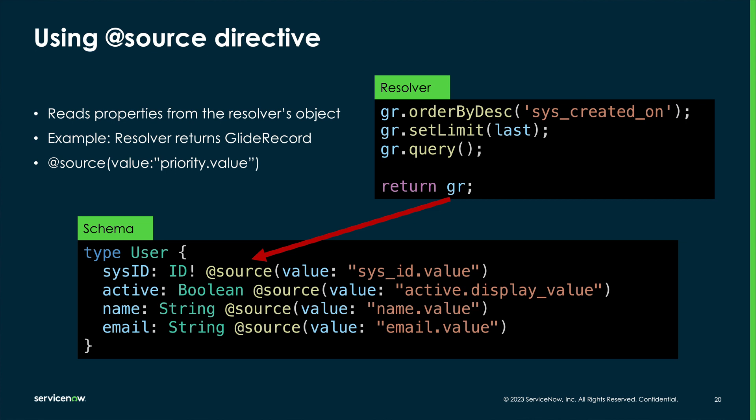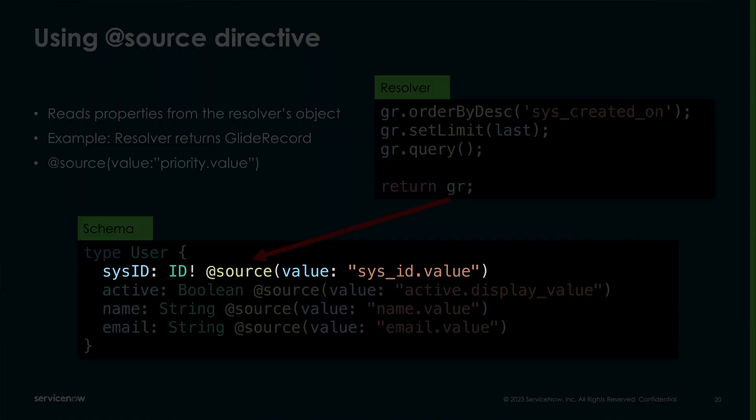Let's take a look at this example. The resolver at the top is set up to return one or more GlideRecord objects. The schema has a type called User containing the fields ID, Active, Name, and Email. We can see that the sysid field is the mandatory ID type. We then use the @source directive to indicate the value comes from the resolver GlideRecord's field sysid.value.